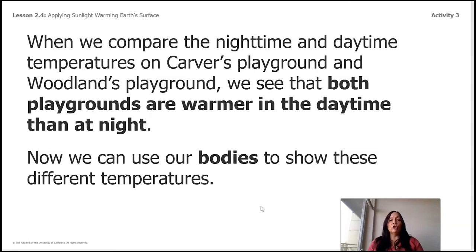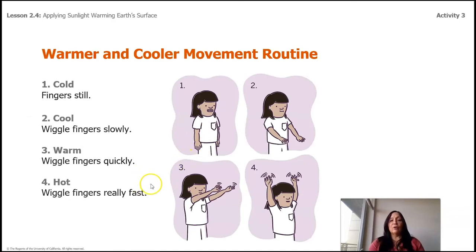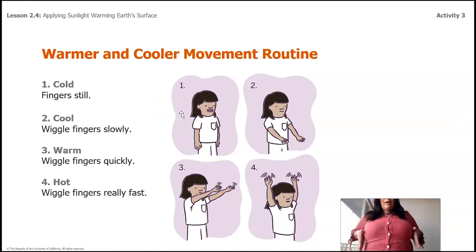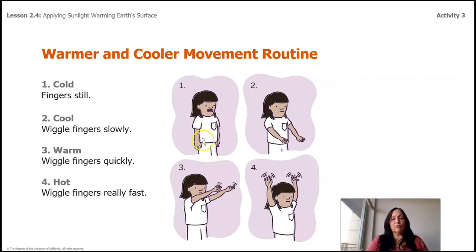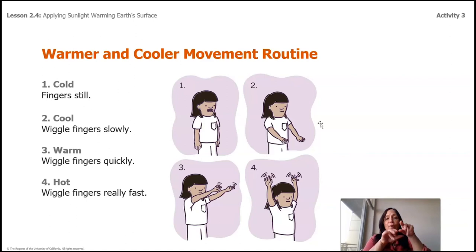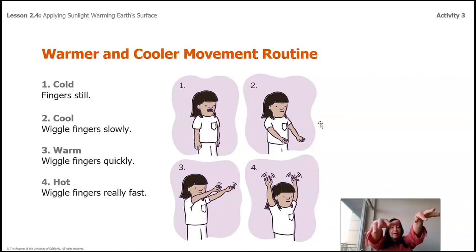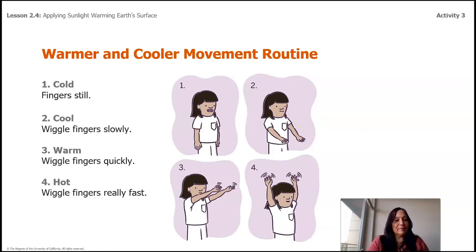Now we're going to use our bodies to show different temperatures. Everybody stand up. For cold, stand up straight and put your hands straight next to your body. For the next level, put your hands to the front and wiggle your fingers — wiggle, wiggle, wiggle. Then put your hands straight out and wiggle them again. And for hot, put them over your head and wiggle. You guys are doing a great job! You can sit back down — that was so awesome.